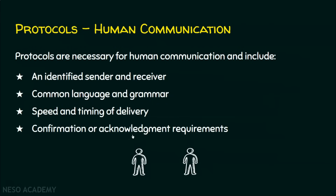Let's talk about protocols in human communication. In human communication, there should definitely be a sender and a receiver — there may be a single receiver or a group of receivers. Human communication can be effective only when it involves common language and grammar. Speed and timing of delivery of speech is also very important. And if this guy wants to ensure whatever he said is understandable, he should get confirmation or acknowledgement from the receiver. Only then human communication can be effective.